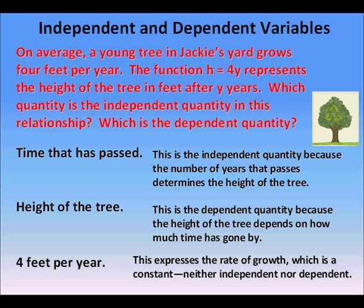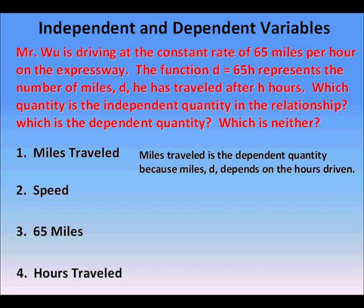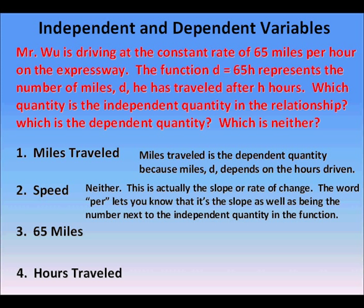Let's look at another situation. Mr. Wu is driving at the constant rate of 65 miles per hour on the expressway. The function d equals 65h represents the number of miles d he has traveled after h hours. Miles traveled is the dependent quantity because miles d depends on the hours driven. The speed is neither the independent quantity nor the dependent quantity — this is actually the slope or rate of change. The word 'per' lets you know that it's the slope, as well as being the number next to the independent quantity in the function.